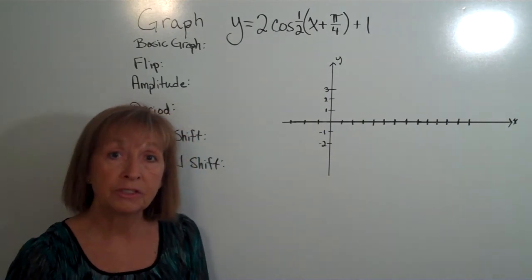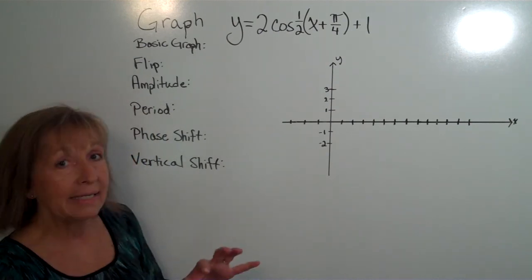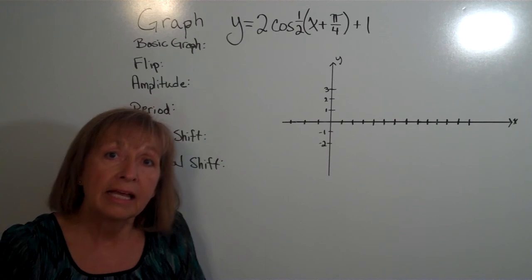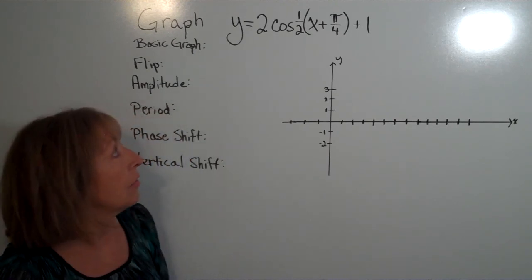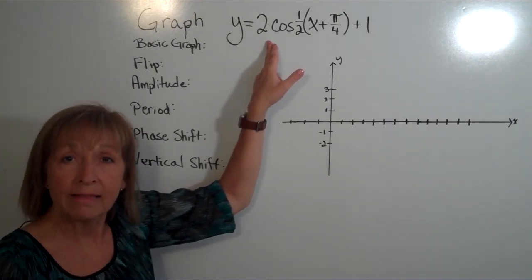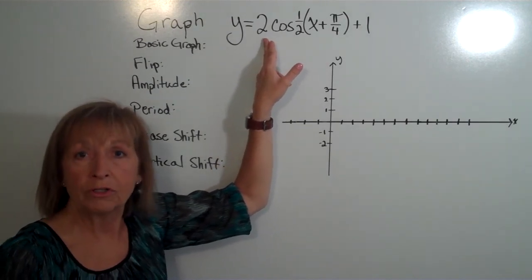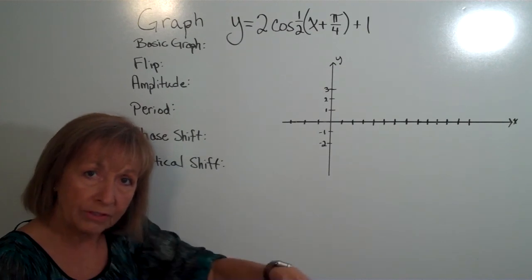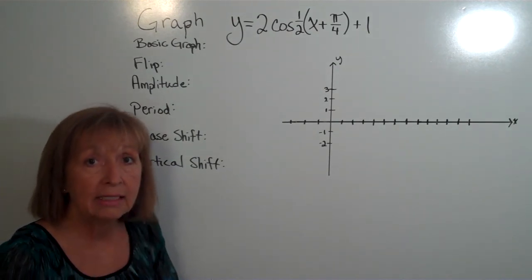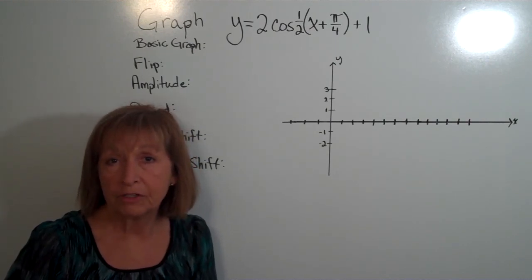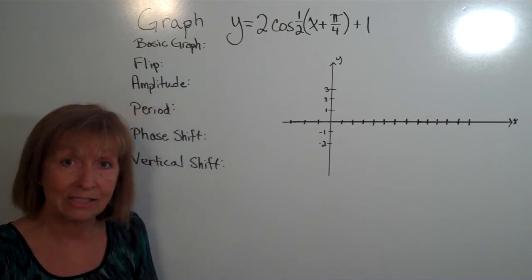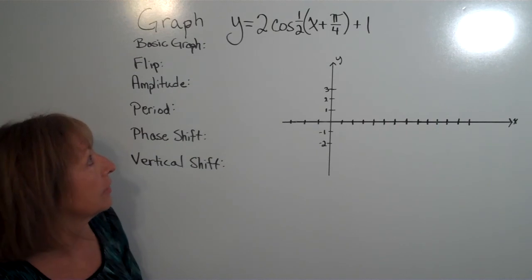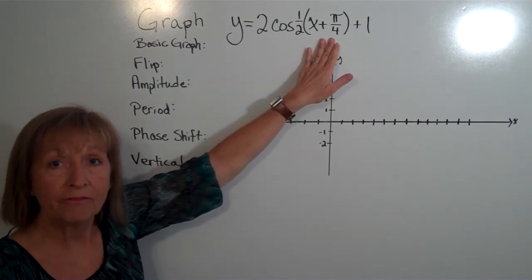In trig we have different names for some of these. The vertical shift is still the number added at the end. The horizontal stretching or shrinking is our period change. The absolute value of the number multiplied to the outside — that vertical stretch — is called amplitude for cosine and sine, representing the maximum distance from the horizontal axis. For secant, cosecant, cotangent, and tangent we still have vertical stretches but it's not called amplitude. The horizontal shift is called the phase shift in trig.